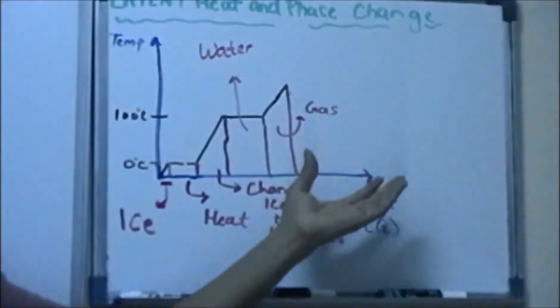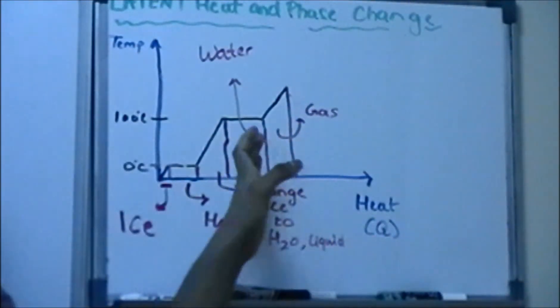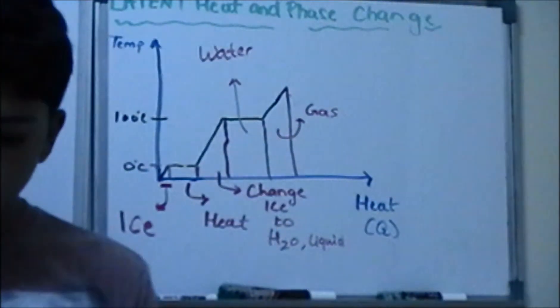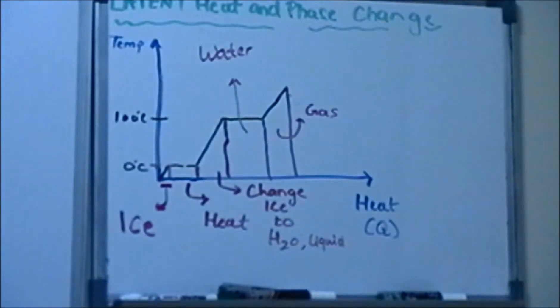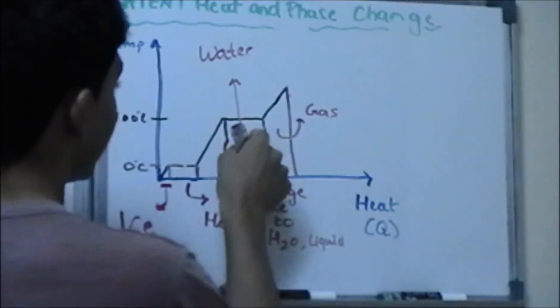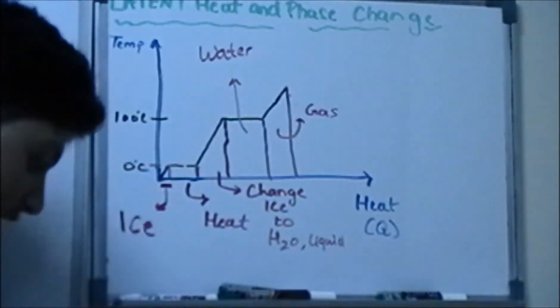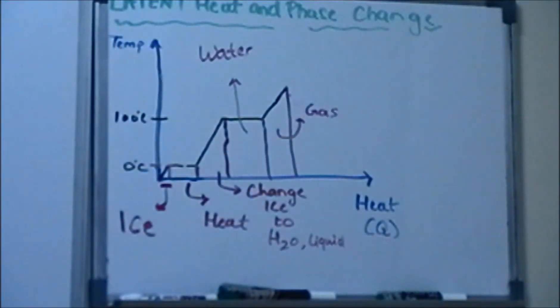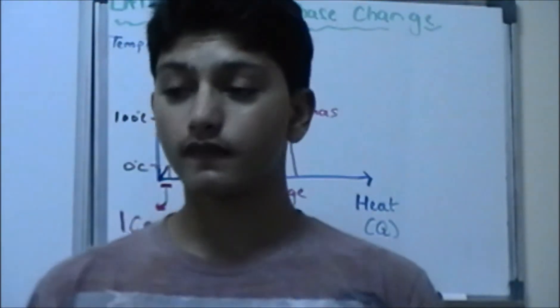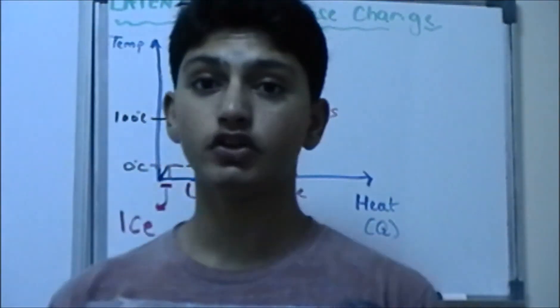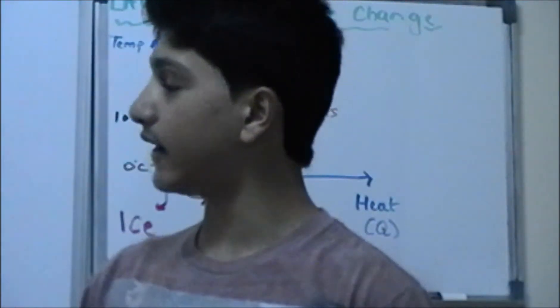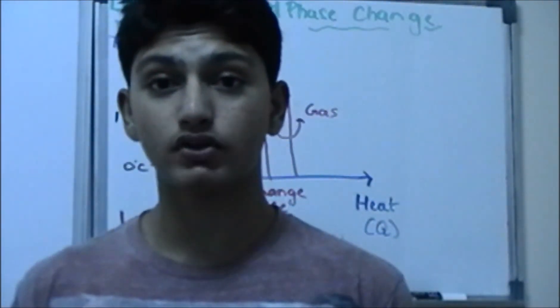Now we all know how to deal with this phase change already. And the slanted lines. Because we talked about slanted lines in our last section. And what I want you guys to know is the first thing to get introduced to the latent heat and phase change. And we'll solve some examples to it.